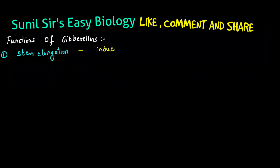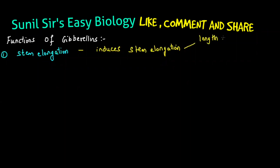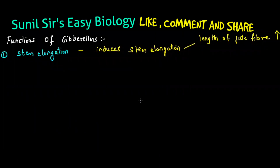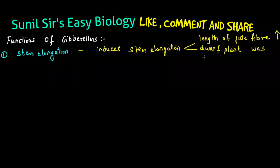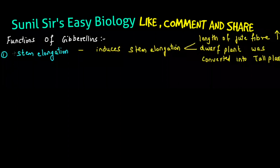First function of Gibberellins: it works in stem elongation. Gibberellins can make any structure longer — it induces stem elongation. For example, if you have a small dwarf plant and you spray Gibberellins on it, the height of that plant will increase. It also increases the length of jute fibers and expands the leaf size — for example banana leaves. Larger leaf size increases their market value, so at a commercial level, Gibberellins is used to increase plant length.